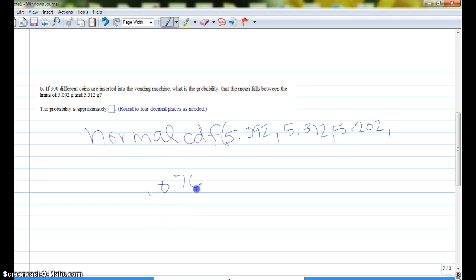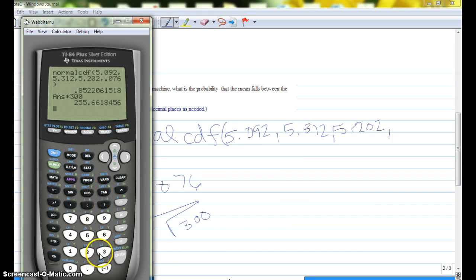But our standard deviation, the 0.076, we have to divide by the square root of 300. So remember, when we're doing more than one thing, we divide by the square root of our n. So if we want to get that number, 0.076 divided by the square root of 300.